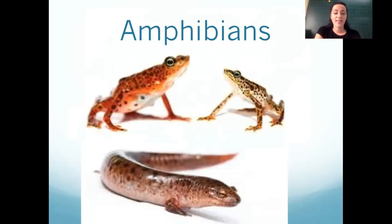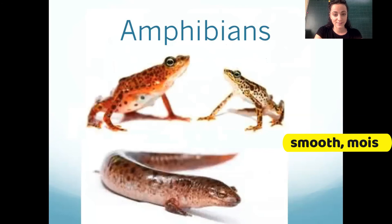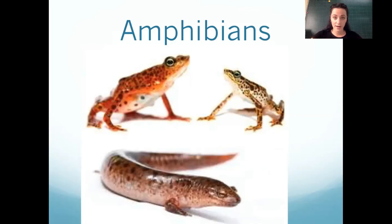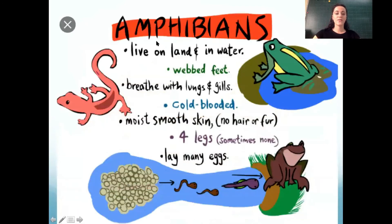It's not bumpy like a reptile — it's smooth and moist. They also have four legs. Amphibians lay their eggs in the water, so they start off their lives in the water. When they become adults, they can live on land and in the water.